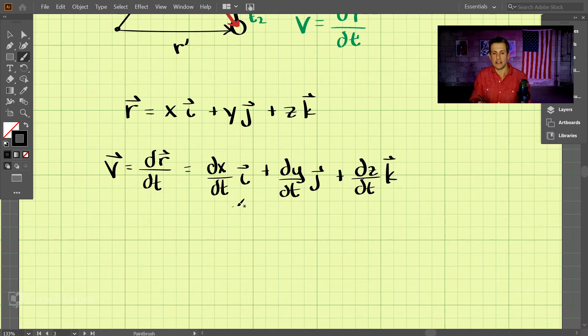and then dy/dt in the j direction, and then dz/dt in the k direction. Now, writing dx/dt every time gets a little cumbersome. It's a lot of writing and kind of muddies everything up. So a lot of times we use this notation called Newton's notation.